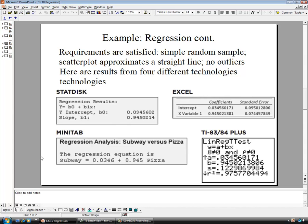Here are a couple other ways to do it. The Minitab one here has, instead of a y and an x, it's filling in for the actual values, what it relates to in context. So the subway is equal to 0.0346, which is our intercept, plus 0.945 times pizza.